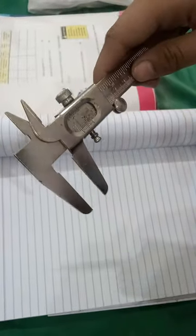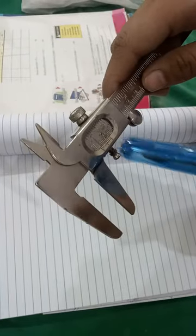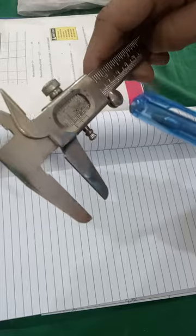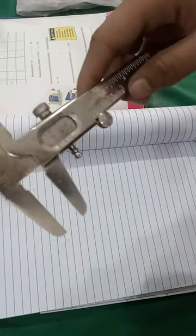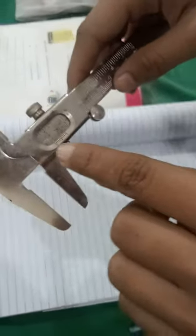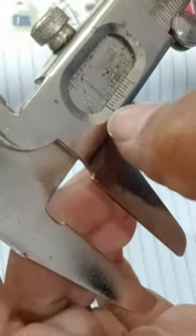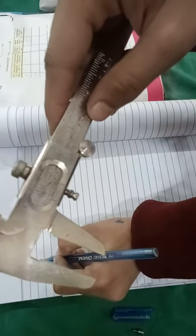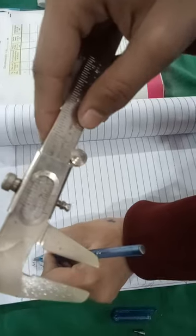First of all, we will check which line of the vernier scale is on the left of the zero of the main scale. We can see that first line of the vernier scale is coinciding with 1.1. We can write 1.1 as our main scale reading.